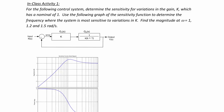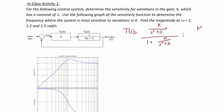The first thing we're going to do is find the closed-loop transfer function for this block diagram. So T is equal to k over s² plus s, divided by 1 plus k over s² plus s. Getting rid of the complex fraction, we get k over s² plus s plus k.